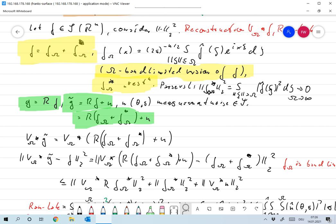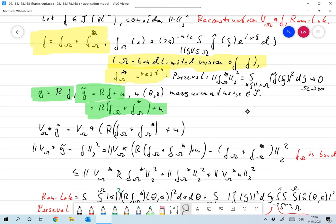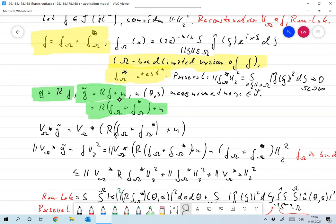Due to Parseval, the Euclidean norm of f_omega star, which is just the norm of the frequencies of f beyond omega, goes to zero for omega to infinity because f is in R2.